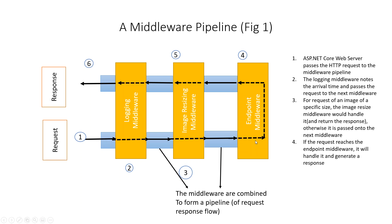Finally, the endpoint middleware — shown here — may not literally be the final one, as there could be more in between. But if the request reaches this final endpoint middleware, it handles the request and generates a response. This response then flows back in the reversed direction. The endpoint middleware, where the request is turned into a response, is also known as a terminal piece of middleware, or terminal middleware. The response passes back through each middleware that ran previously.